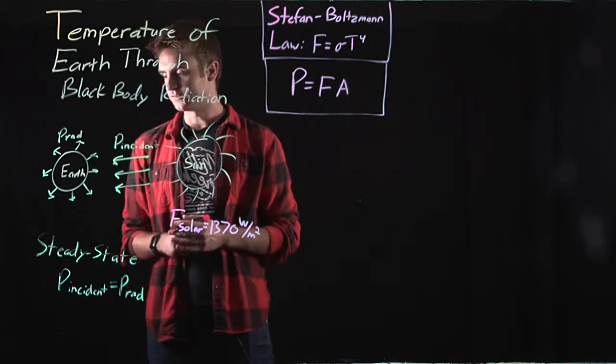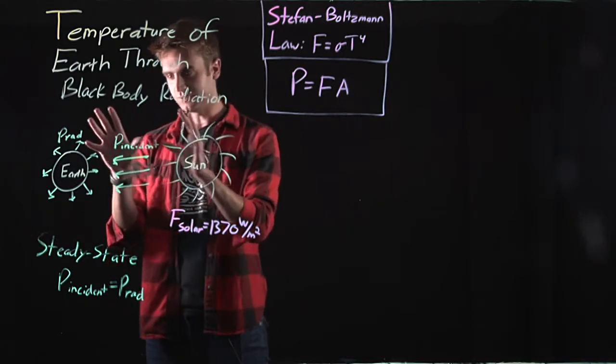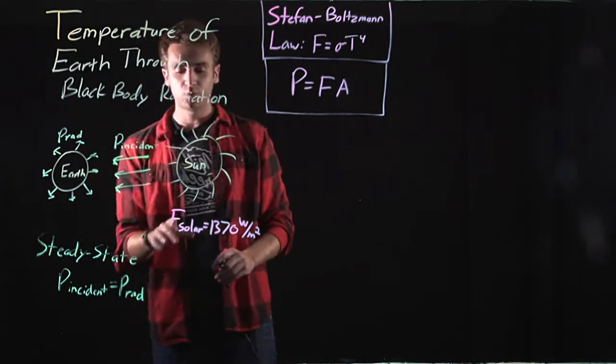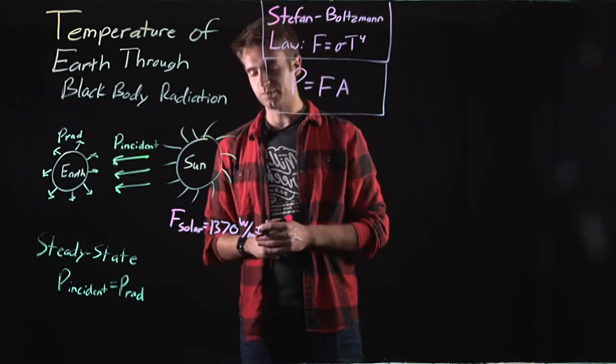So let's start with an equation for P incident. How would we describe the radiation that the Earth receives? Well, we're given that the solar flux is 1370 watts per meter squared.